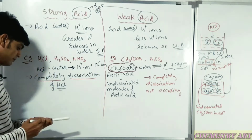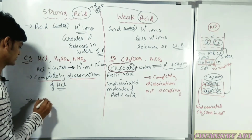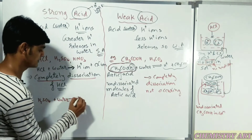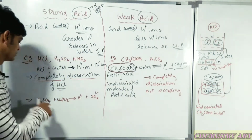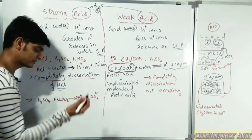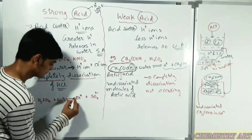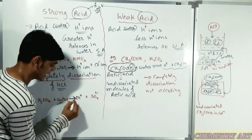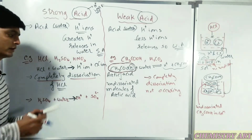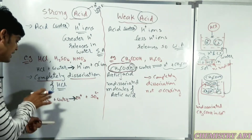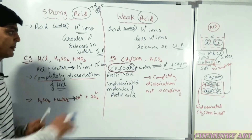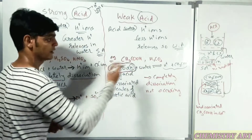Let me write one more example. For H2SO4 - sulfuric acid - when mixed with water, it releases 2 H+ ions and SO4 2- ion. Again I have shown a single arrow, which means only a single-side reaction is occurring. H2SO4 converts into H+ and SO4 2- but does not convert back into H2SO4, so it is a strong acid.